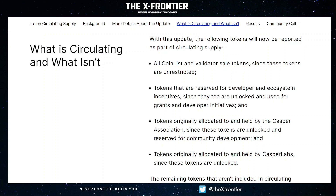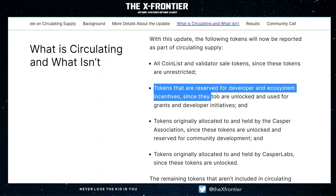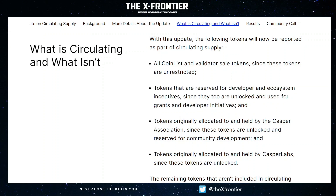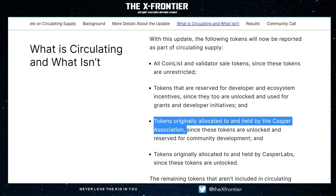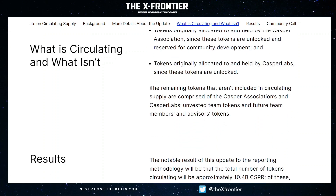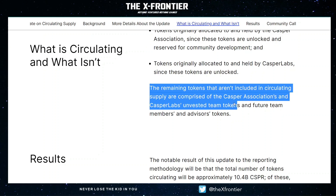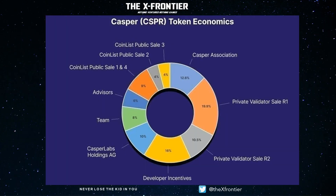As mentioned earlier, we're going to get into what constitutes circulating supply and what doesn't. With this update, the following tokens are going to be reported as part of the circulating supply: all CoinList and validator sale tokens, since these tokens are unrestricted; tokens reserved for developer and ecosystem incentives, since they too are unlocked and used for grants and developer initiatives; and tokens originally allocated to and held by Casper Labs, since these are also unlocked. The remaining tokens not included in circulating supply are comprised of the Casper Association's and Casper Labs' unvested team tokens, and future team member and advisor tokens. Looking at the Casper token distribution, the team and advisors hold 8% and 6% respectively.